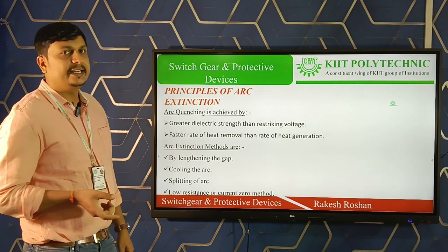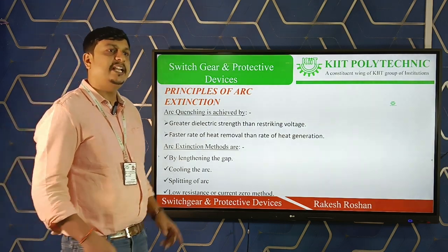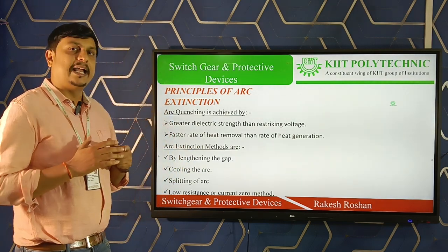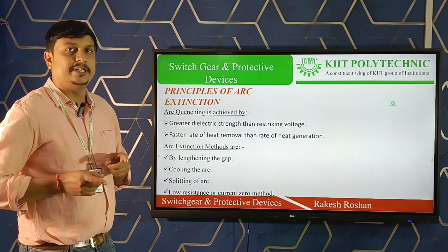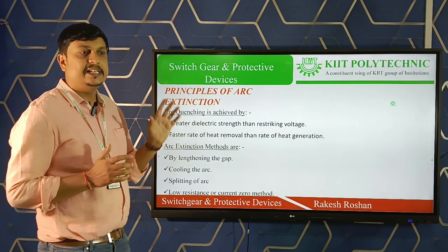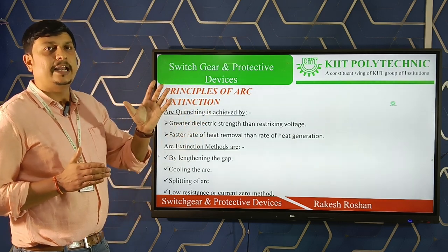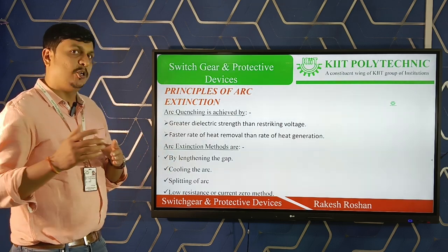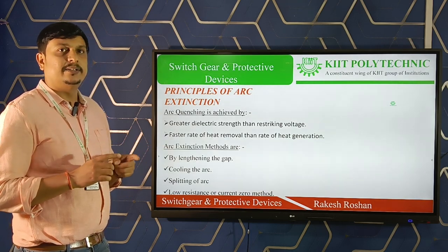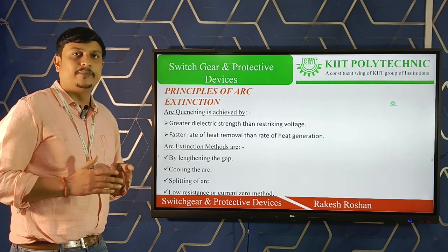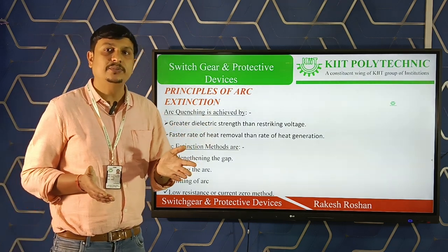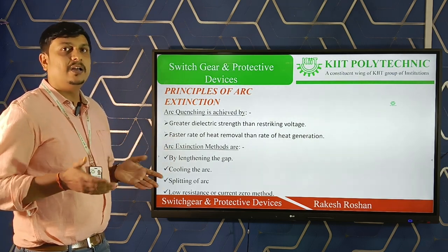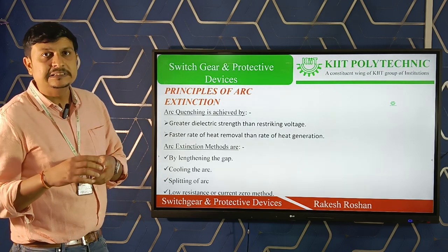Arc can be extinguished by two methods. First, we can increase the dielectric strength more rapidly than the re-striking voltage — the re-striking voltage is the transient voltage that appears across the contacts of a circuit breaker during fault or abnormal conditions. If the dielectric strength builds up more rapidly than the re-striking voltage, the arc fails to continue. Second, we can perform fast cooling or fast deionization between the contacts.